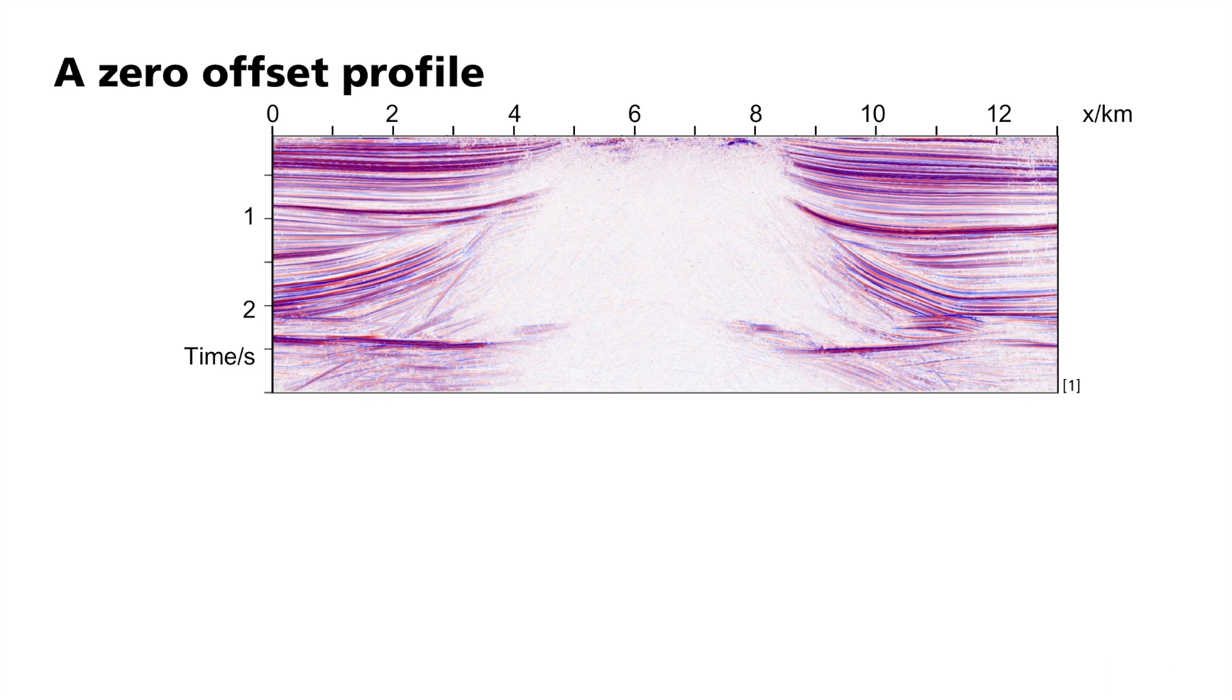In practice, that means before the migration, a velocity model is calculated using a different method. For the real example, this type of model is available from the onset. This is a stacked profile of seismograms that has already been shown. Obviously, there are no simple layer boundaries in the subsurface here. Instead, the picture is dominated by a structure extending far, both vertically and horizontally.